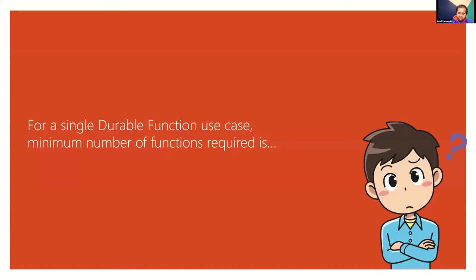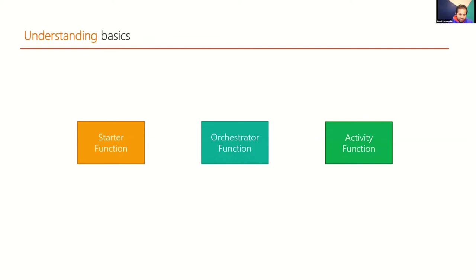A question I often get from people starting with durable functions: how many Azure functions are required to create one durable function use case? The answer might throw everyone off — we need a minimum of three Azure functions to create one durable scenario. Those three are: the starter function, the orchestrator function, and the activity function. They are the three types of Azure functions we need minimum to run an end-to-end durable function.